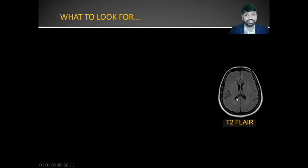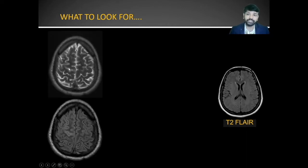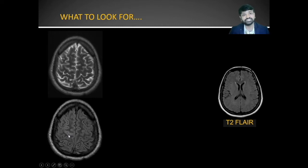The FLAIR sequence will suppress fluid signal, so normal CSF in the ventricular system or in the sulcal spaces will not give any signal. FLAIR is a very good sequence to appreciate subtle abnormalities. For example, cortical bright signal may not be appreciated clearly because of the adjacent CSF bright signal, but on FLAIR you will appreciate the same bright signal much more easily because of the background suppression of the CSF signal.